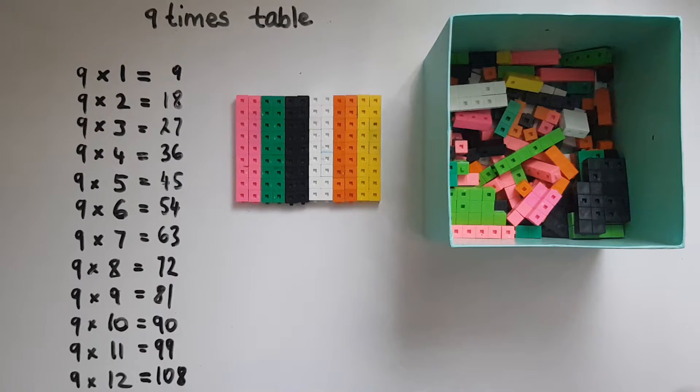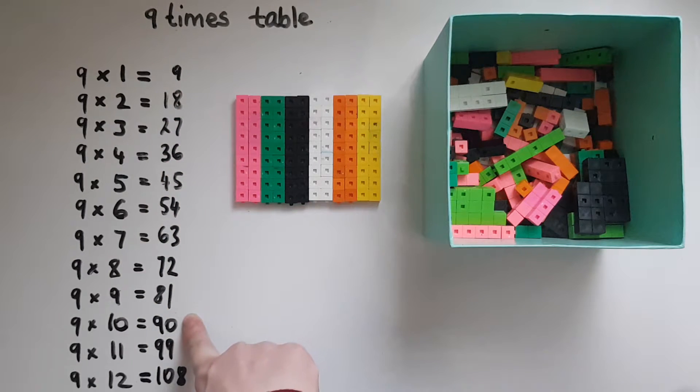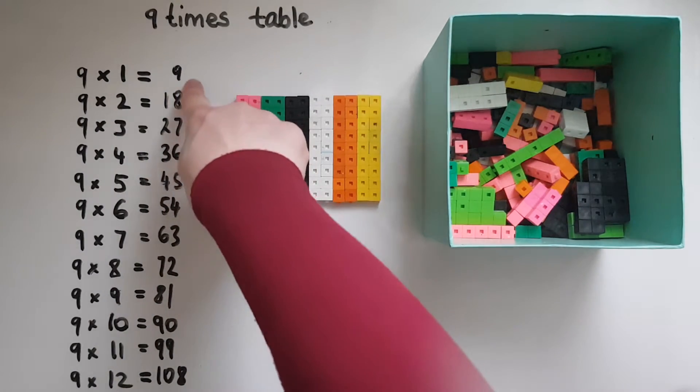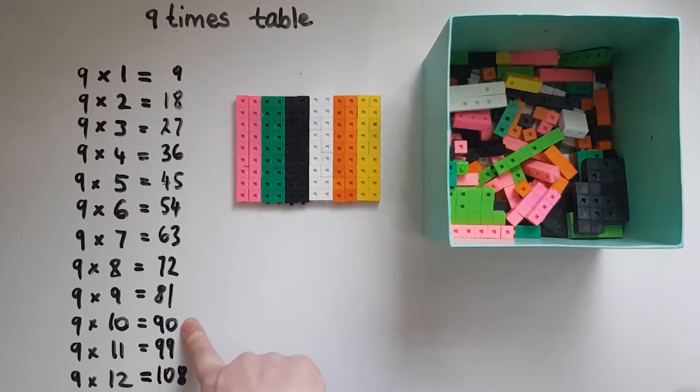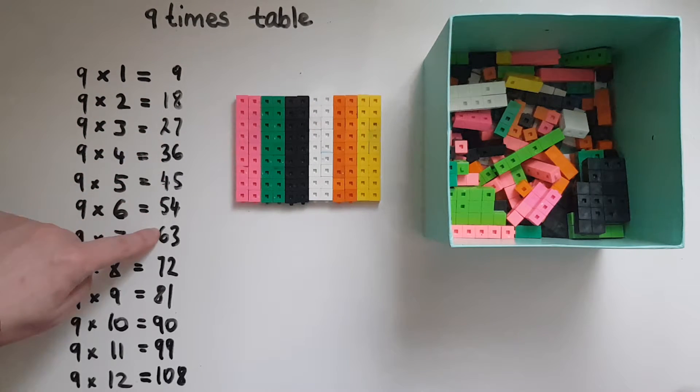Also, if you look at the pattern, in the units column up to 9 times 10, it's going down by 1 each time: 9, 8, 7, 6, 5, 4, 3, 2, 1, 0. And the tens column is going up by 1 each time: 1, 2, 3, 4, 5, 6, 7, 8, 9.